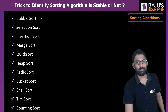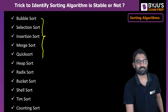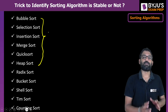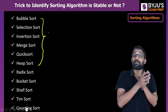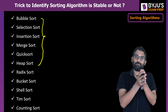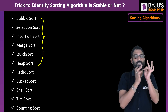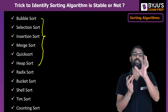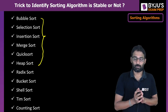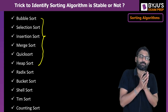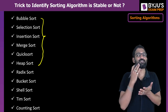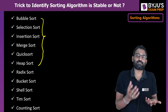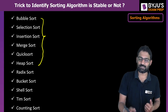From a GATE point of view, you are supposed to learn and practice the first six sorting algorithms: bubble sort, selection sort, insertion sort, merge sort, quick sort, and heap sort. Now, among these sorting algorithms, which is stable and which is unstable — how can you identify that? First, you should know what stable and unstable mean.